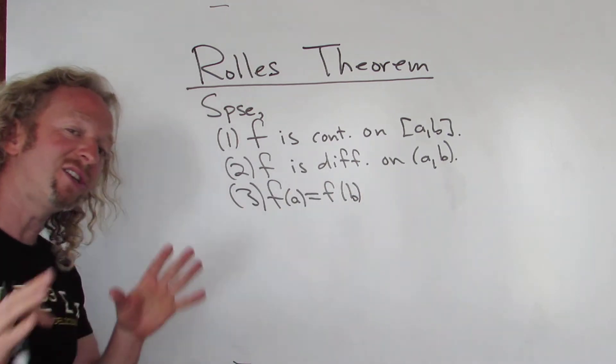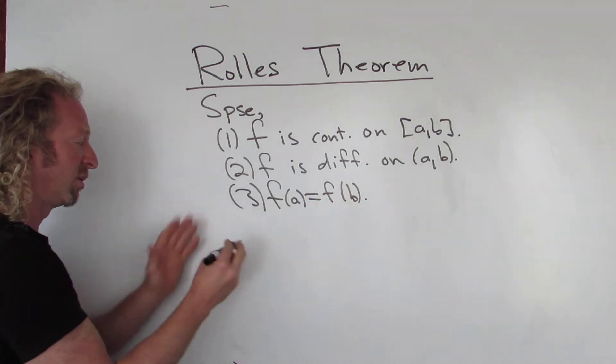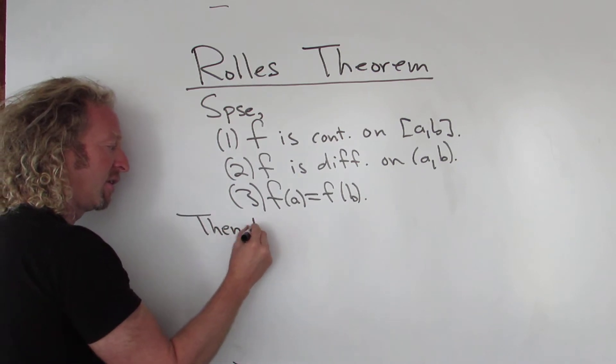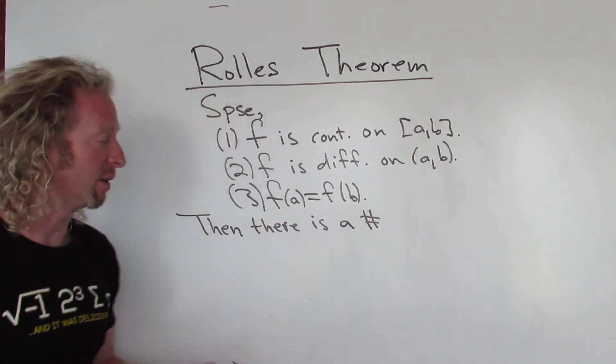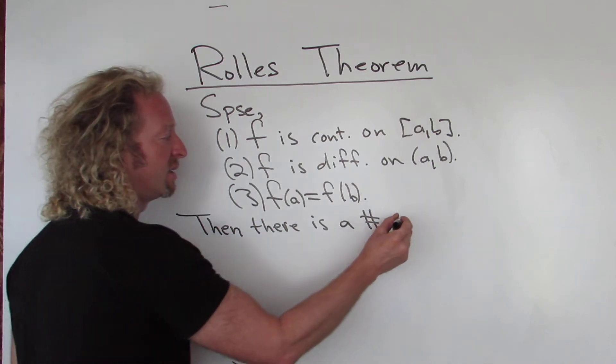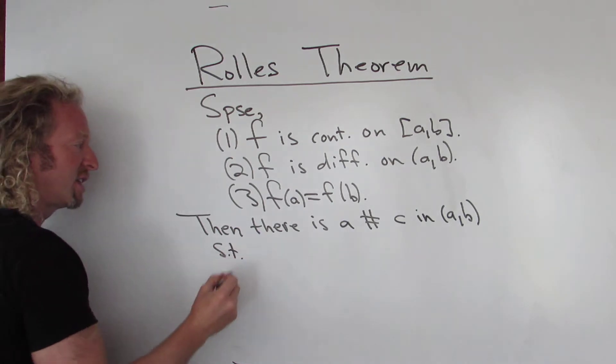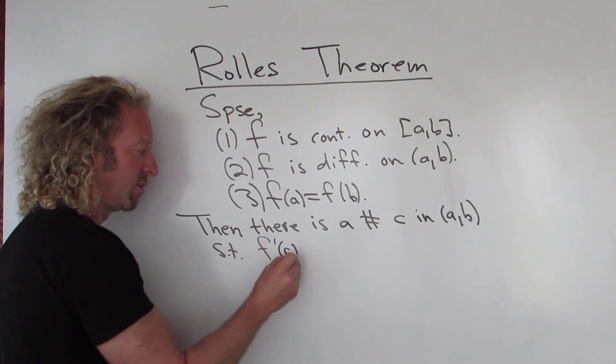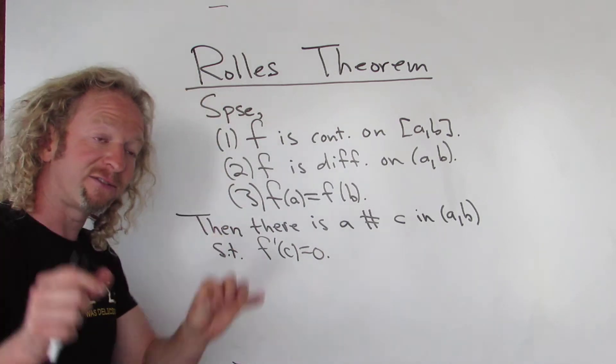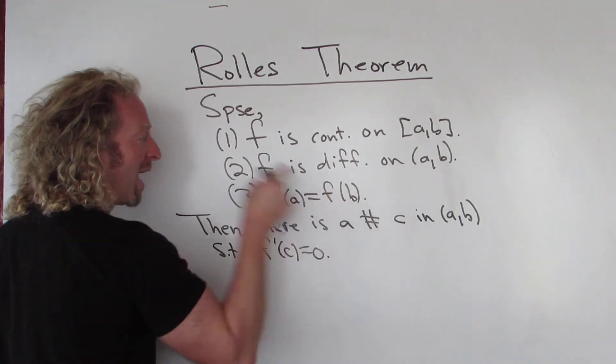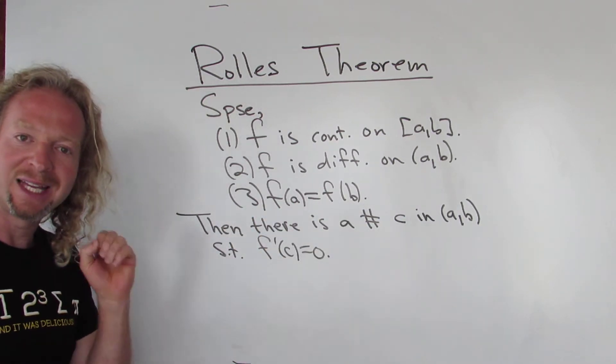So if these three conditions are satisfied, then you can invoke Rolle's Theorem. If all three conditions hold, then there is a number, there could be more than one as you'll see in a minute when we look at the pictures, there is a number c in the open interval such that the derivative at c is equal to 0. So Rolle's Theorem says if you have a continuous function, if the function is continuous on the closed interval, differentiable on the open interval, and the y values are the same at the endpoints, then you can find the number in the interval where the derivative is 0.